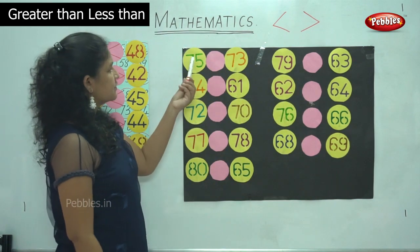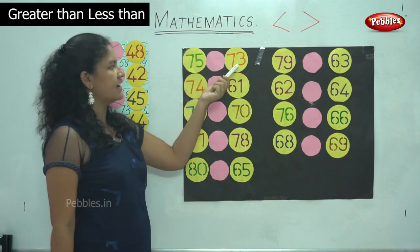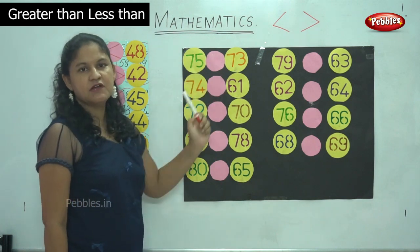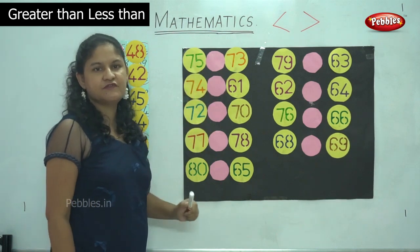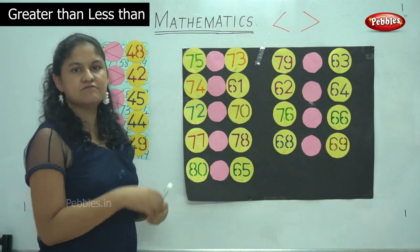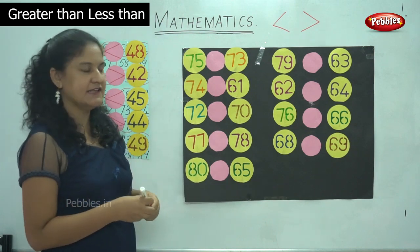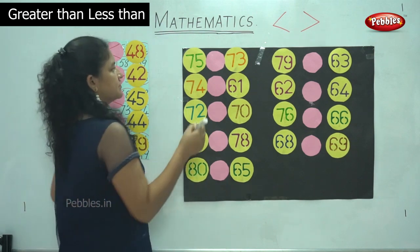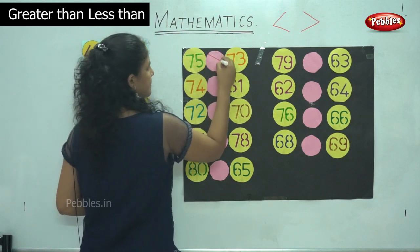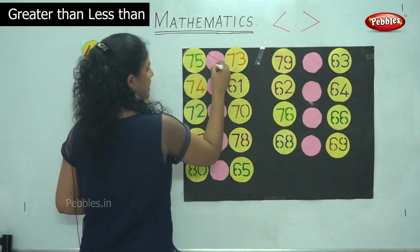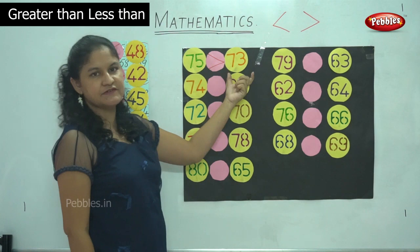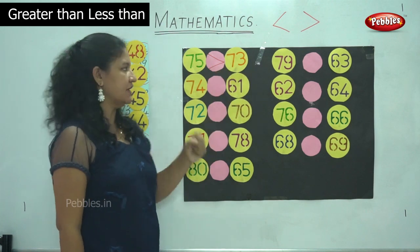We will move on to the next numbers. We have number 75 and 73. Number 75 is greater, so the mouth of the alligator opens towards the bigger number. We have 75 is greater than 73.